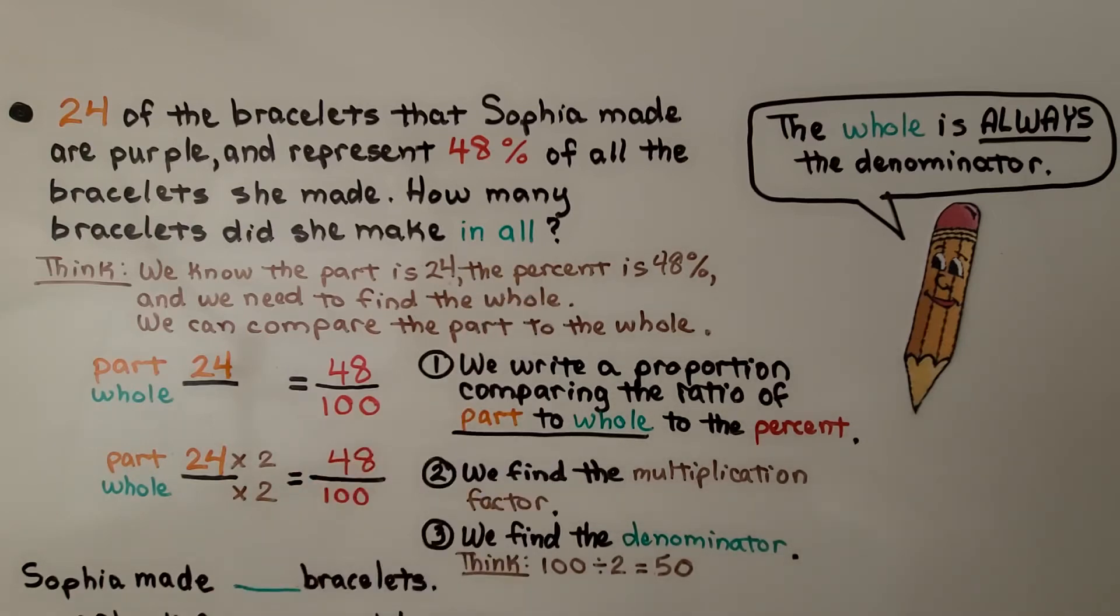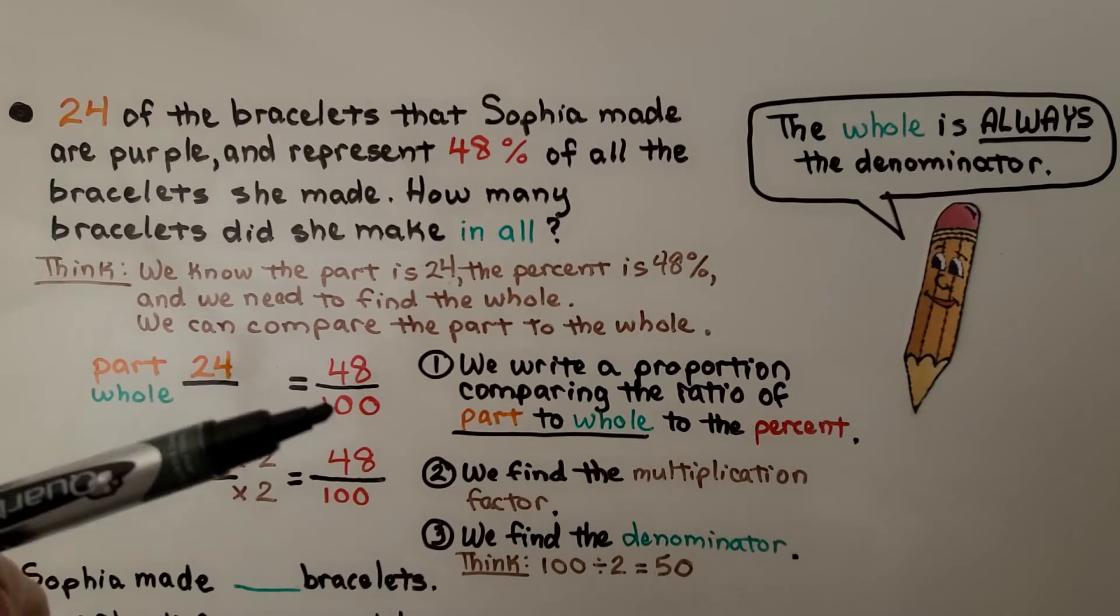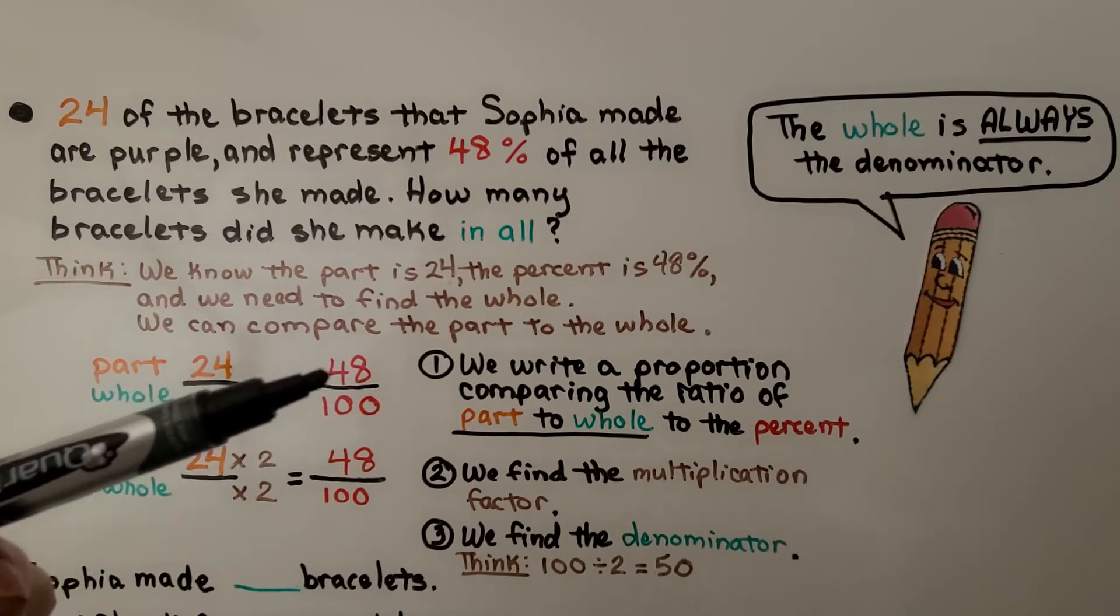We can compare the part to the whole. We write a proportion comparing the ratio of part to whole to the percent. And we write that over 100 for 48%.